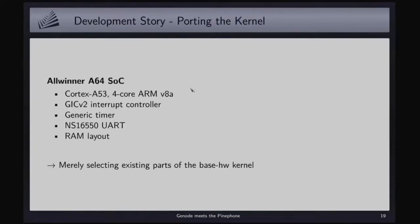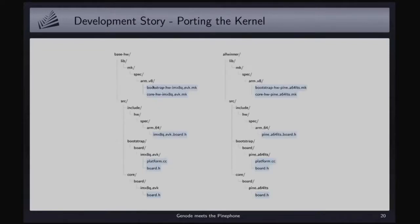The next thing is to port the microkernel. The AllWinner SoC of the PinePhone is really nice to us because it consists of components readily supported by the existing baseHW kernel of the Genode OS framework. It's a 64-bit ARM SoC using the standard ARM GIC version 2 interrupt controller, generic timer infrastructure, a very simple UART interface, and of course a custom memory layout that needs to be configured. It basically comes down to mirroring the platform support for an existing SoC — for example the i.MX8 — and adjusting those files for the PinePhone: picking the right interrupt controller and setting up the physical memory layout. This takes about a week and is not a big challenge.